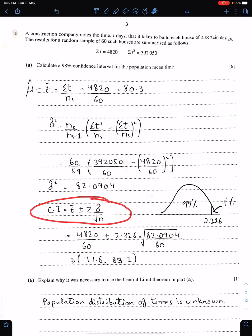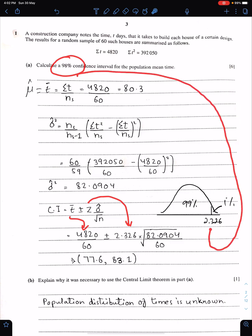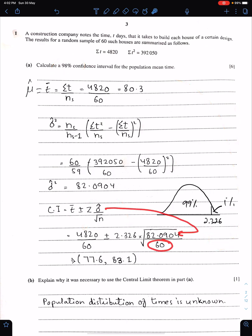This is the formula for confidence interval. We have T-bar. Z is 2.326 because we are calculating 98% confidence interval. Therefore, the corresponding Z value should be 2.326. Sigma square is this and N is 60. This is the required confidence interval. Make sure you give your answer up to one decimal place.